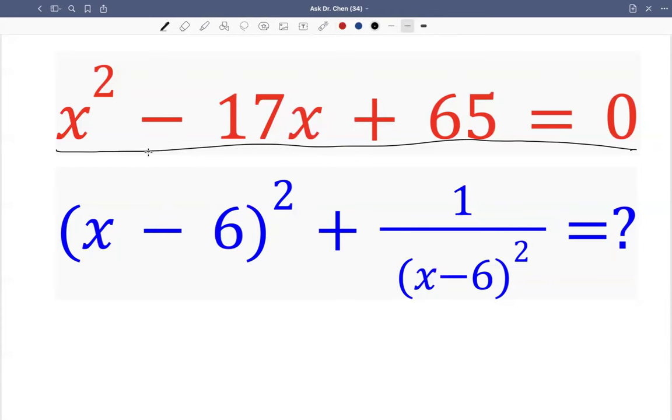So we want to construct x minus 6. Let's see from the equation. If we want to do x minus 6, then 65, let's think about 66 minus 1. Then 6 plus 11, that's 17.